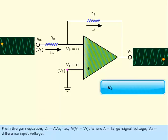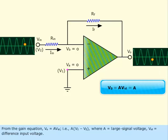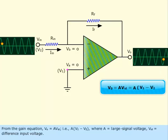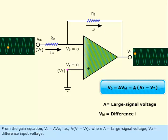From the gain equation, V₀ = AVᵢd, that is, A(V₁ - V₂), where A equals large-signal voltage, Vᵢd equals difference input voltage.